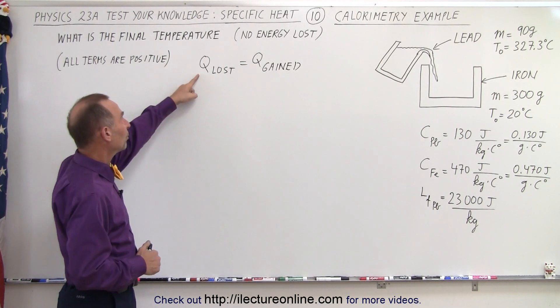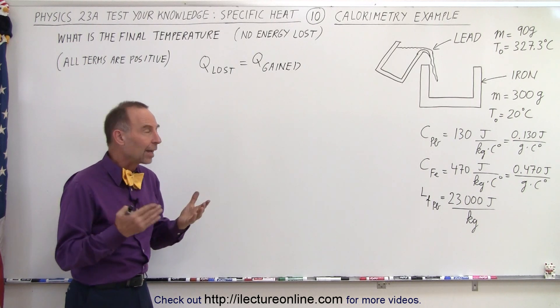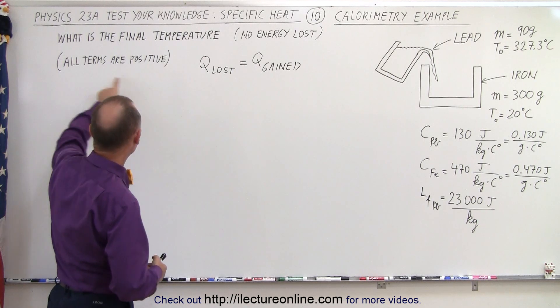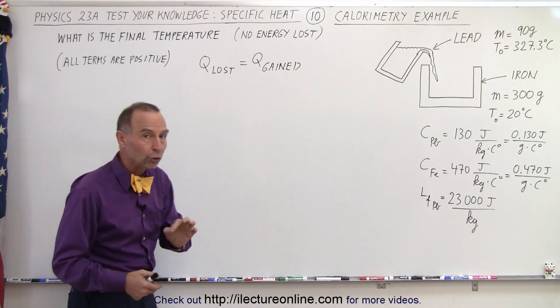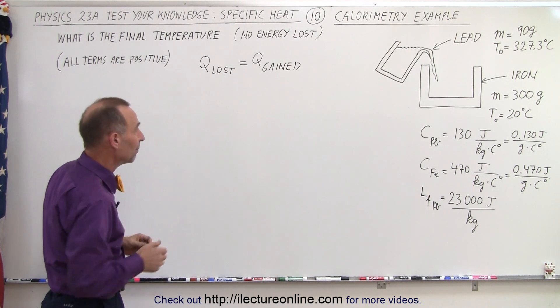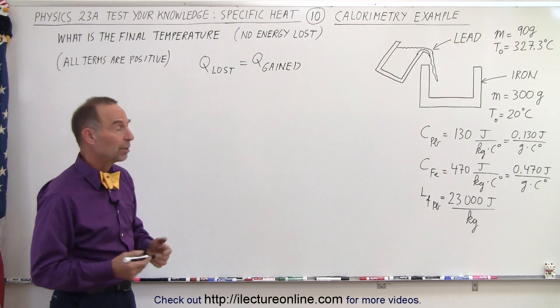We're going to use the principle that all the energy lost by the hot items equals all the energy gained by the cold items. And if we're going to do that, we must make sure that all the terms in the equation are positive, and that's a really important aspect of this particular method of solving the calorimetry problem.